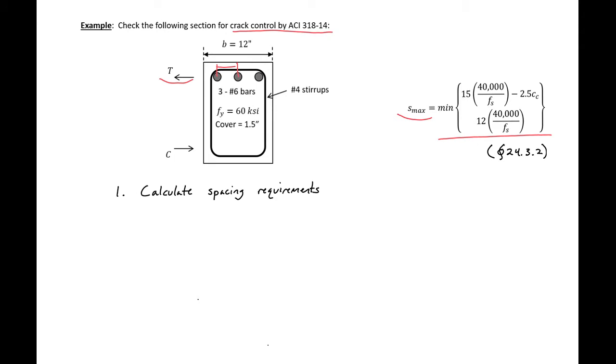The first thing that we'll need to do is calculate our spacing requirement using the ACI equation. So we need to calculate our CC and our FS before we can find our S max. So our CC here is going to be equal to our cover plus the diameter of our stirrup. So for us we have one and a half inch cover and we have a number four stirrup which is four eighths or one half inch. So we'll get a CC value of two inches.